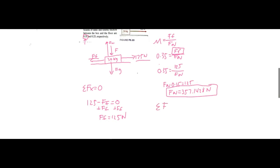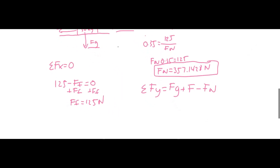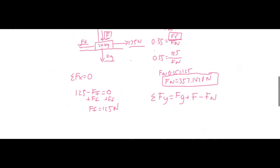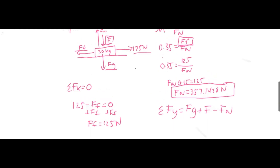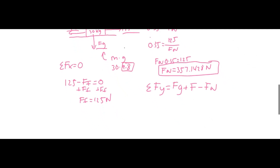We know that the sum of all the forces in the y direction will include Fg, which is acting in the negative direction, and also the applied force in the y direction, and then the normal force. So how can we find Fg? Well, Fg is just m times g, so 30 times 9.8 — I'm assuming the box is on Earth. So that's going to be 294, plus f which we don't know, and then subtract the 357 newtons. That is the sum of all the forces in the y.